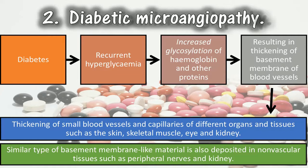2. Diabetic microangiopathy. The pathogenesis of diabetic microangiopathy, as well as of peripheral neuropathy in diabetics, is believed to be due to recurrent hyperglycemia that causes increased glycosylation of hemoglobin and other proteins — for example collagen and basement membrane material — resulting in thickening of the basement membrane. Microangiopathy of diabetes is characterized by basement membrane thickening of small blood vessels and capillaries of different organs and tissues such as the skin, skeletal muscle, eye, and kidney. Similar basement membrane-like material is also deposited in non-vascular tissues such as peripheral nerves and kidney.